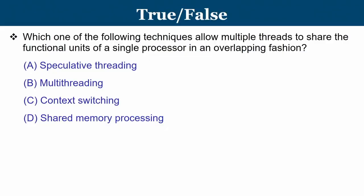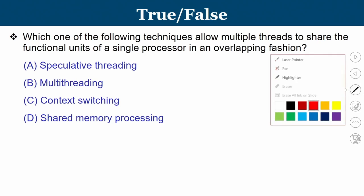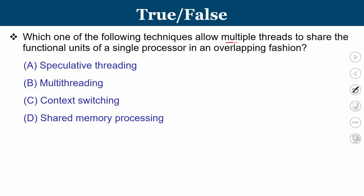Which one of the following techniques allows multiple threads to share the functional units of a single processor in an overlapping fashion? There are two things to discuss here. One is with respect to multiple threads — you have two threads that are going to run on functional units of a single processor in an overlapping fashion. If you have functional units available at some point of time for thread T1, then thread T2, and that has to be done in an overlapping, intermingled fashion.